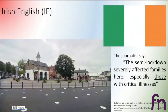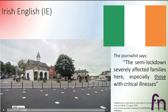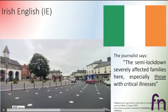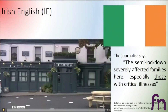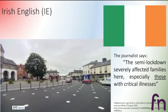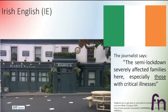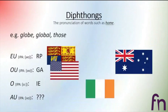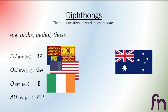Let's hear the Irish speaker. The journalist says: 'The semi-lockdown severely affected families here, especially those with critical illnesses.' The word 'those' is interesting to us here. Let's hear it once more, paying attention to 'those'. He says 'those' — with a long [oː]. So in Ireland, these words are pronounced 'globe', 'global', 'those' with a long [oː]. This is characteristic, though not universal across all speakers.